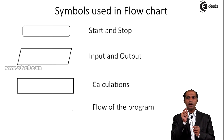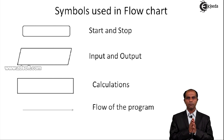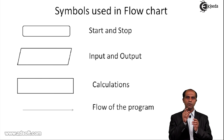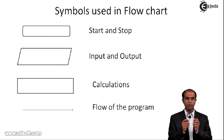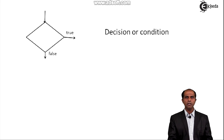Input and output connections must be marked with arrows. An arrow indicates the flow of the program — the path the program is following. A start symbol will only have an outgoing arrow and no incoming arrow, whereas a stop symbol will have only an incoming arrow and no outgoing arrow.